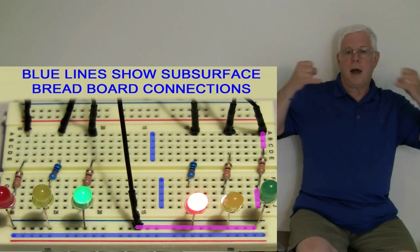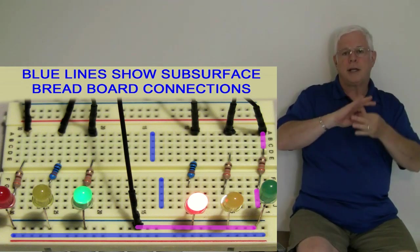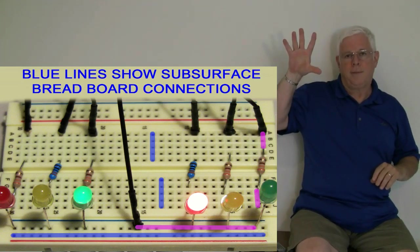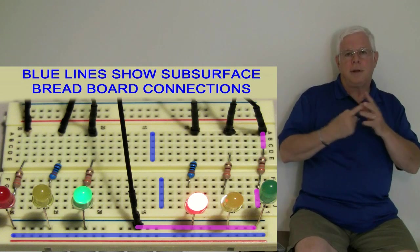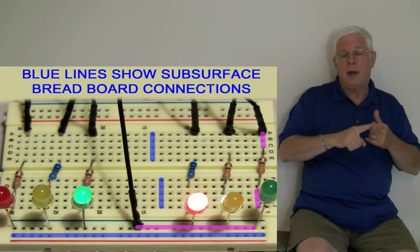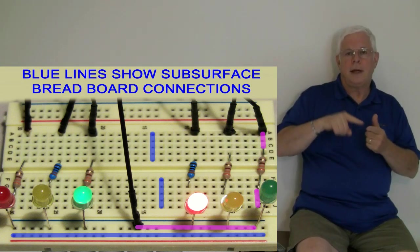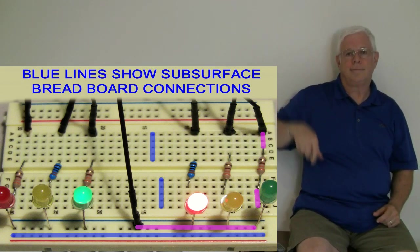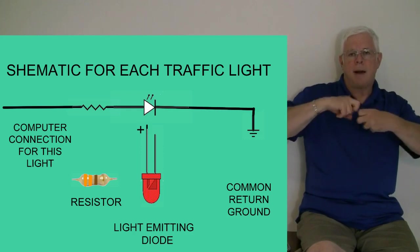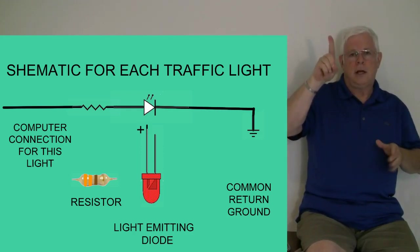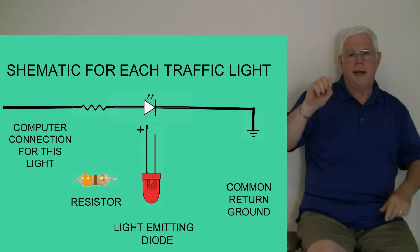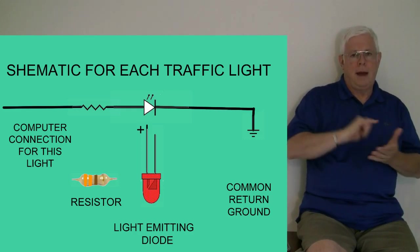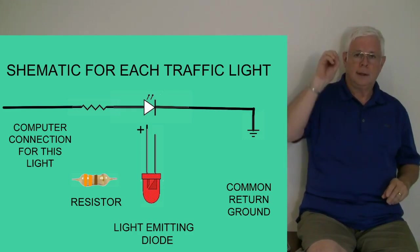The pink lines show all the interconnections for the circuit for the green light. It starts with the black wire from the computer, then to the resistor, then to the LED, and then to the common ground. The only wiring problem is that the LED longer leg must be connected to the resistor so that the LED will light up.